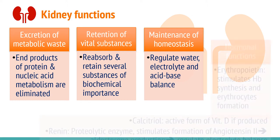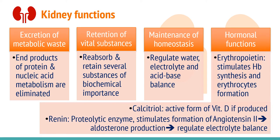Apart from these, the kidney also performs some hormonal functions. It secretes erythropoietin, which stimulates hemoglobin synthesis and erythrocyte formation. Calcitriol, which is the active form of vitamin D, is produced from the kidney. Renin, which is a proteolytic enzyme synthesized in the kidney, stimulates the formation of angiotensin 2, which further stimulates aldosterone production that helps in regulation of electrolyte balance.